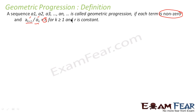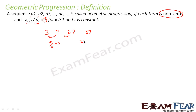For example, consider the sequence 3, 9, 27, 81. This is a GP because 9 divided by 3 is 3, 27 divided by 9 is 3, and 81 divided by 27 is 3. The ratio is constant, so this is a GP.